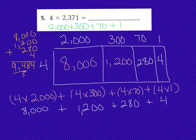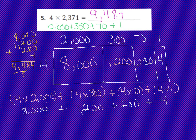I did the addition here, making sure to line up each place value in the correct spot. When I add 8,000 plus 1,200 plus 280 plus 4, my final product is 9,484. That is the product of 4 times 2,371. Boys and girls, I hope that you have all of this work underneath problem number 5.